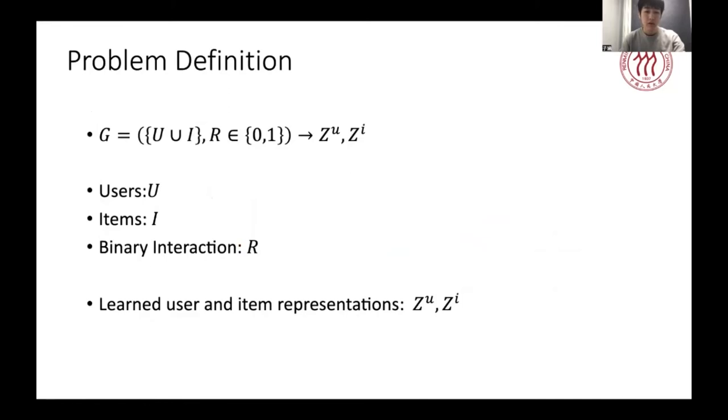Before we detail introduce our approach, we firstly define the problem. Given a user set U, an item set I, and the interaction between them, we can construct a bipartite graph G, and the target is to learn a representation for each user and item to make recommendation.